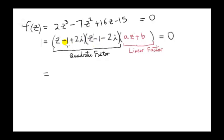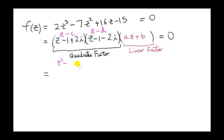Let's get the quadratic factor by multiplying those two expressions. You can see these two expressions have the form z minus c and z minus d, where c and d are constants — complex numbers, but that doesn't matter. If we multiply z minus c by z minus d, we get z squared minus z times the sum (c plus d) plus the product of c and d.